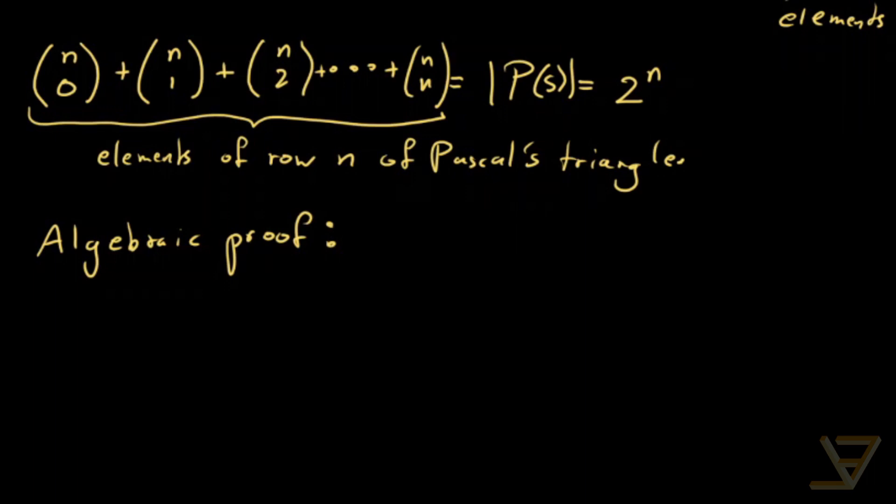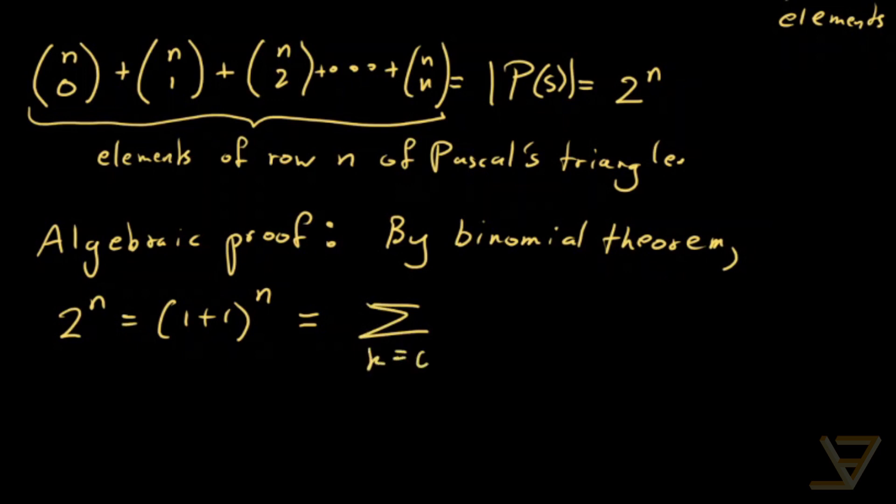And what this proof says is that by the binomial theorem, it holds that 2 to the power of n is equal to (1 plus 1) to the power of n. And that by binomial expansion sums over the indices k equal to 0 through n, n choose k times 1 to the k times 1 to the n minus k.